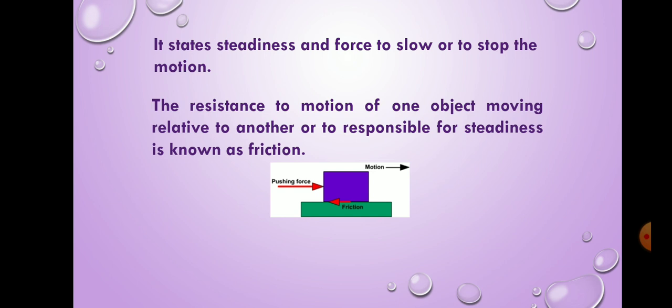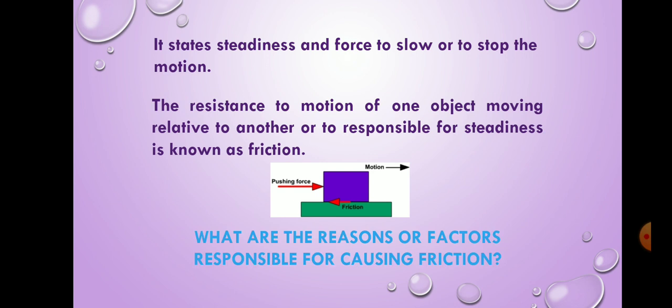The definition of friction is the resistance to the motion of one object moving relative to another or responsible for the steadiness known as friction. Here we get the definition of friction. But what are the reasons or factors responsible for the cause of friction?